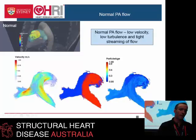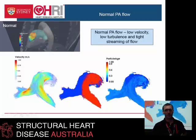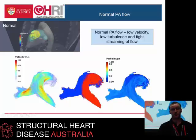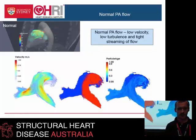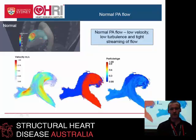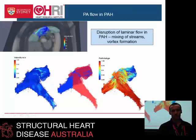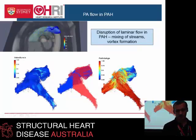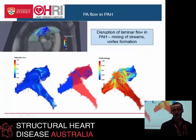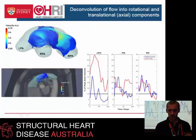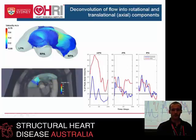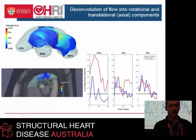The other interesting thing is to look at where flow goes and where it comes from. This shows the surprising degree of streaming that exists in the MPA. Basically, if you're on the right side of the MPA, you go down the right pulmonary artery - full stop. There's no mixing. Whereas when there's a vortex, there's a hell of a lot of mixing - I think it's about 30-40%. You've got lots of disturbed flow persisting for much longer in the RR interval, and that just doesn't happen in a control.